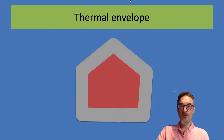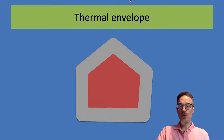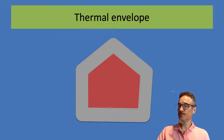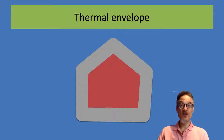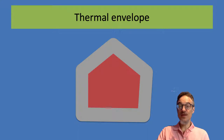Next question: thermal envelope. If we're looking at a building or a house, we need to be able to draw a line around the outside of the building. Then we can decide which part is inside and which part is outside.